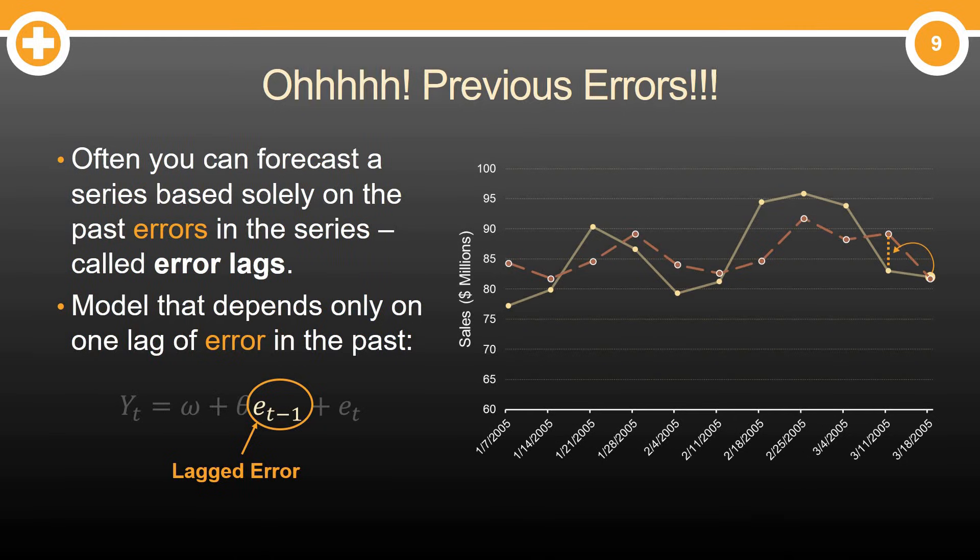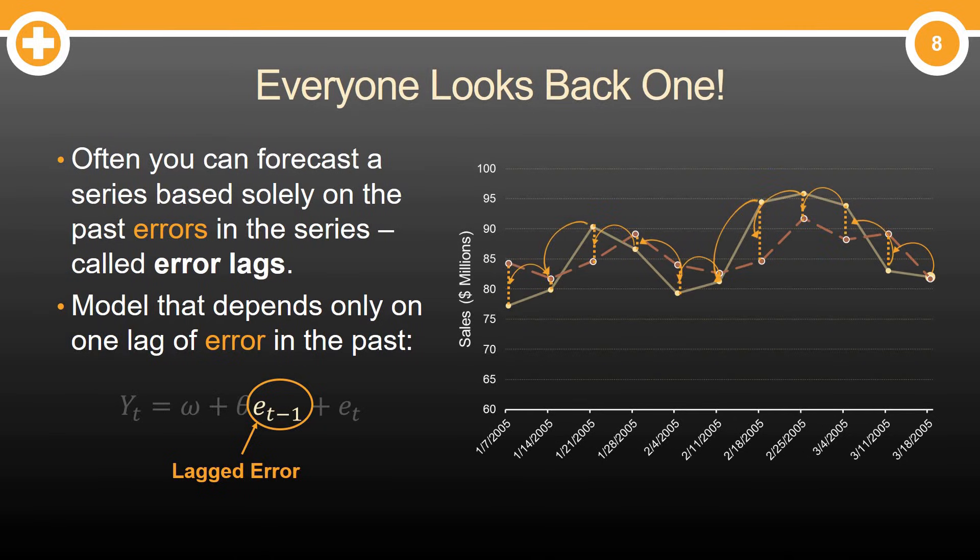And of course, these things happen across the entire time period. The errors that always happened before affect the current observations today. Again, these unseen shifts, the things we didn't expect in that current time period, actually permeate into the next time period.